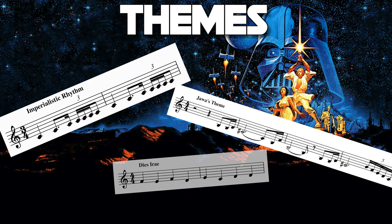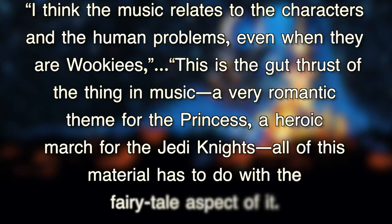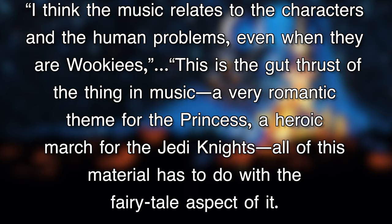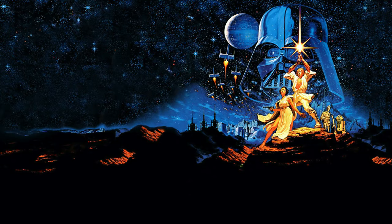There are other incidental themes that appear throughout the film, but they aren't really in the scope of this video. About all of these themes, Williams says: "I think the music relates to the characters and the human problems, even when they are Wookiees. This is the gut thrust of the thing in music — a very romantic theme for the princess, a heroic march for the Jedi Knights. All of this material has to do with the fairy tale aspect of it. I didn't want to hear a piece of Dvorak here, a piece of Tchaikovsky there. What I wanted to hear was something to do with Ben Kenobi, more developed here, and something to do with his death over there. What we needed were themes of our own, which one could put through all the permutations of a dramatic situation. I felt we needed our own themes, which could be made into a solid dramaturgical glue from start to finish." So with that, let's take a more in-depth look at each theme, starting with the main theme.